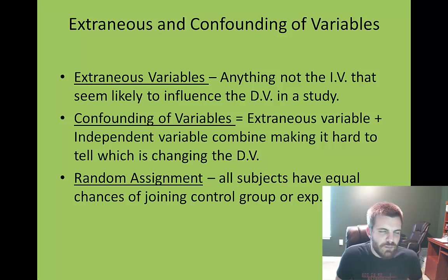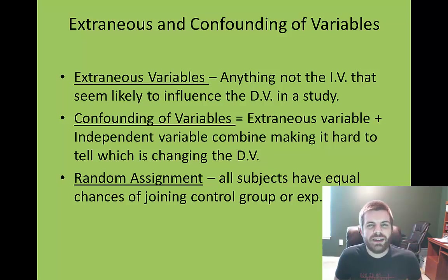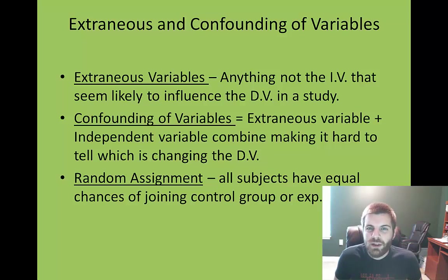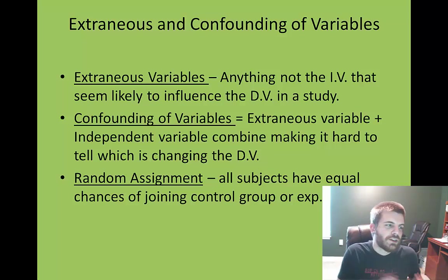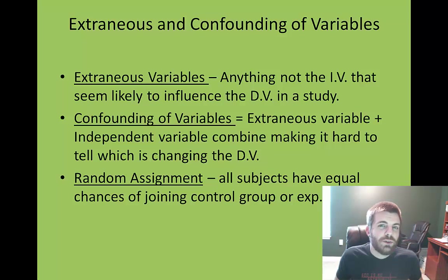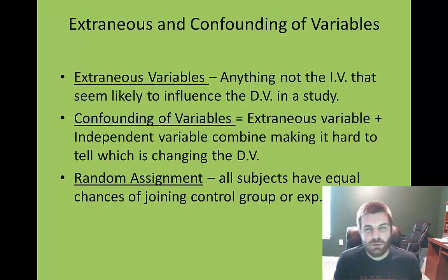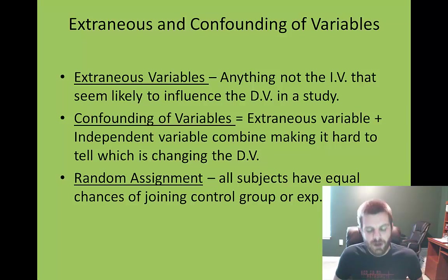Random assignment is a strategy often used in the experimental method to give everyone an equal chance of being part of the control group or the experimental group. Some people might be really good test takers and others really bad, and through random assignment some may go to each group, which helps control for test-taking ability. If you intentionally put all the great test takers in the experimental group, you're already setting up your experiment to fail because you won't be able to tell if the snack food is helping or not.